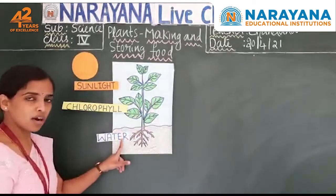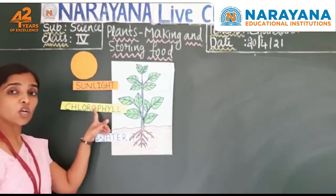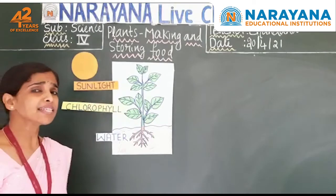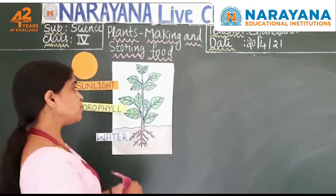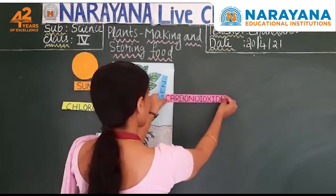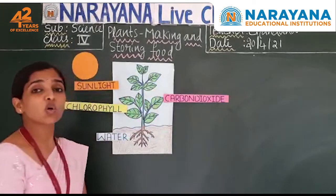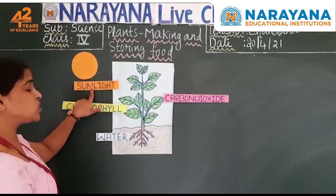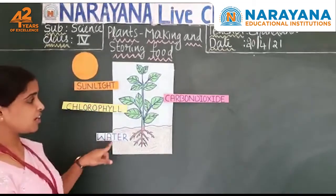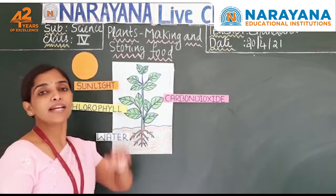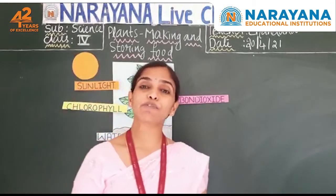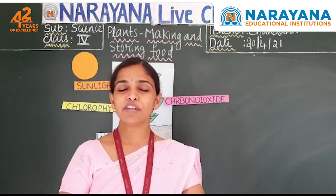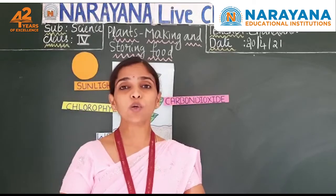The leaf has water, it has chlorophyll, and now it is also getting sunlight. What else is required? One more thing — carbon dioxide. Plants require carbon dioxide for preparing food, along with sunlight, chlorophyll, and water. With all these together, the plant is able to prepare food. The plant prepares food in the form of glucose.